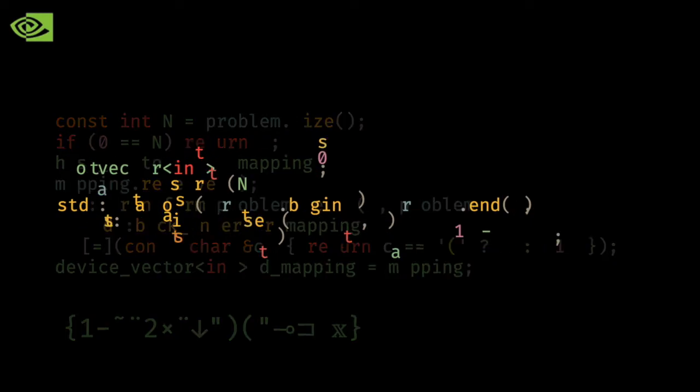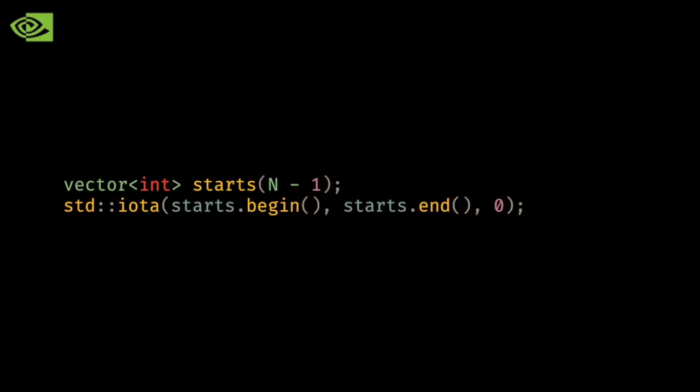I then create an STL vector to hold the starting positions for each prefix. I'm using the STL here instead of Thrust because I'll otherwise have to nest my CUDA calls, and not all of the Thrust API is callable from the device.